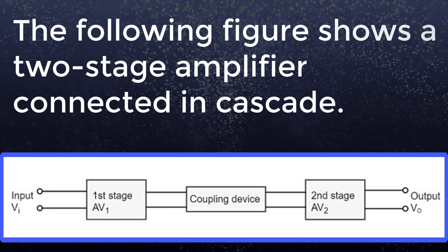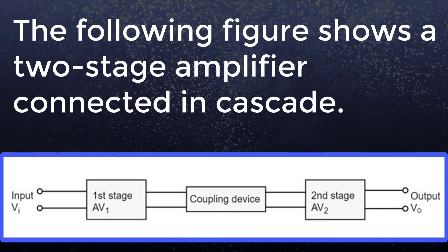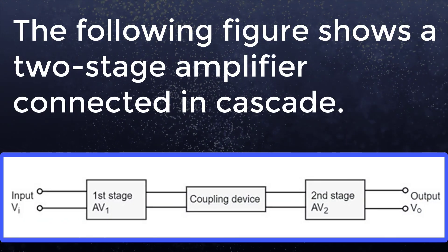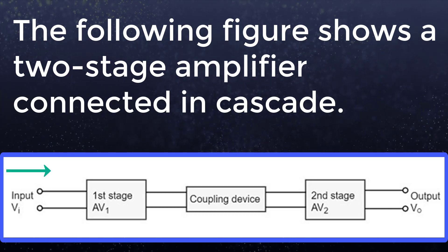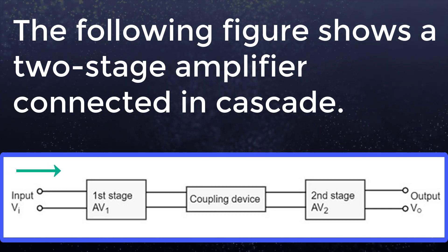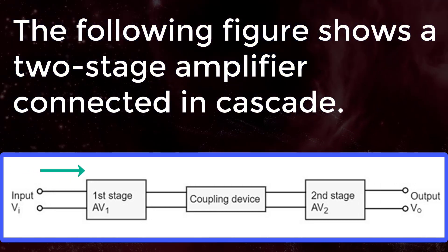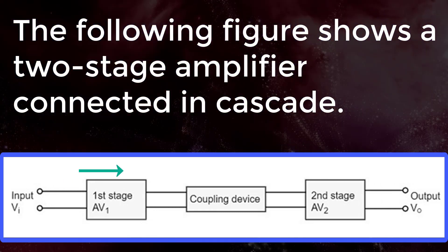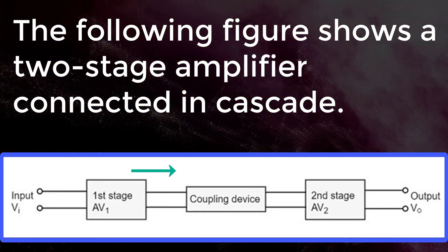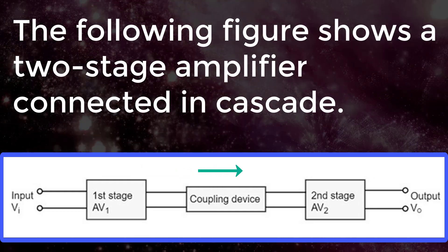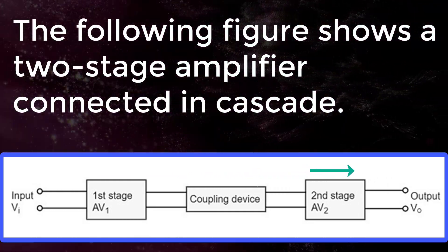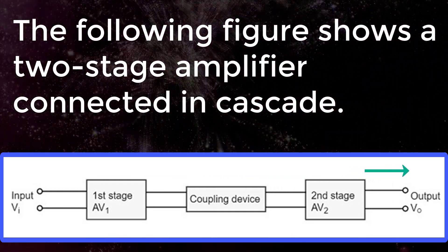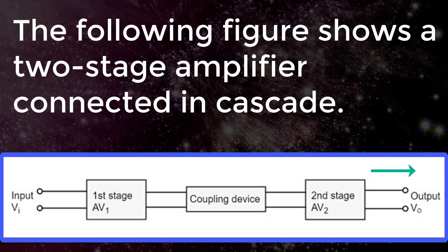The following figure shows how a two-stage amplifier is connected in cascade. Input V1 is equal to the first stage AV1, and passed on to the coupling device, then into the second stage AV2, then to output V0.